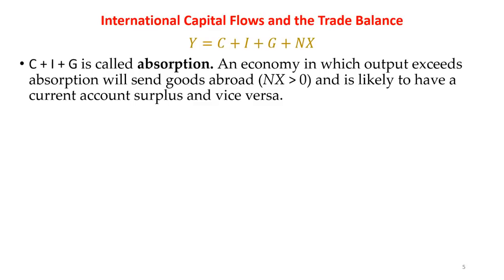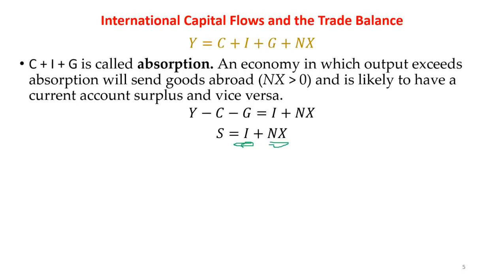Rearranging this equation, we know that Y minus C minus G is the saving, and saving is equal to I plus NX. So saving has two uses: number one, to increase the nation's stock of capital by funding investment, and number two, to increase the nation's stock of foreign assets by lending to foreigners.